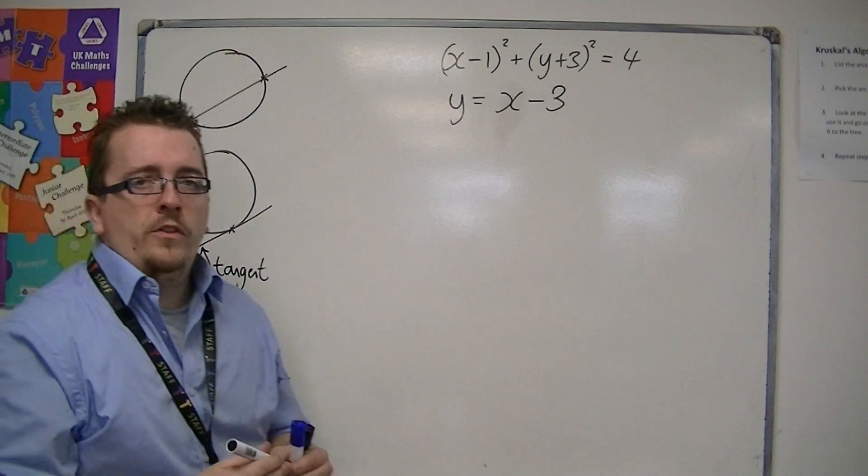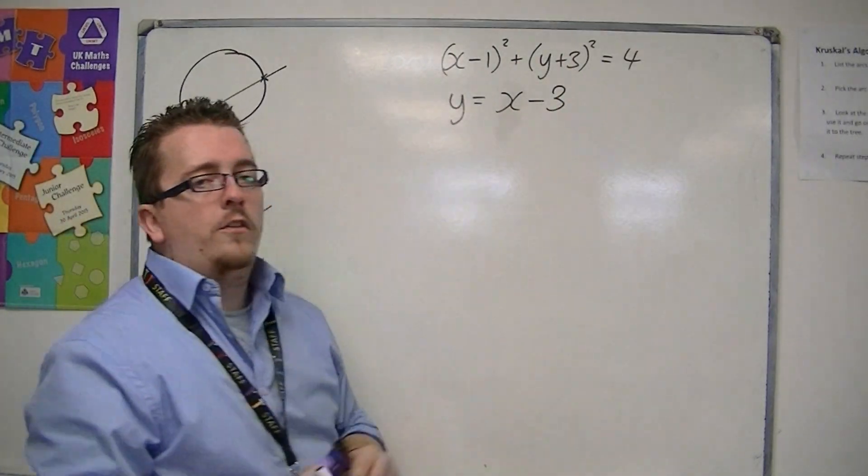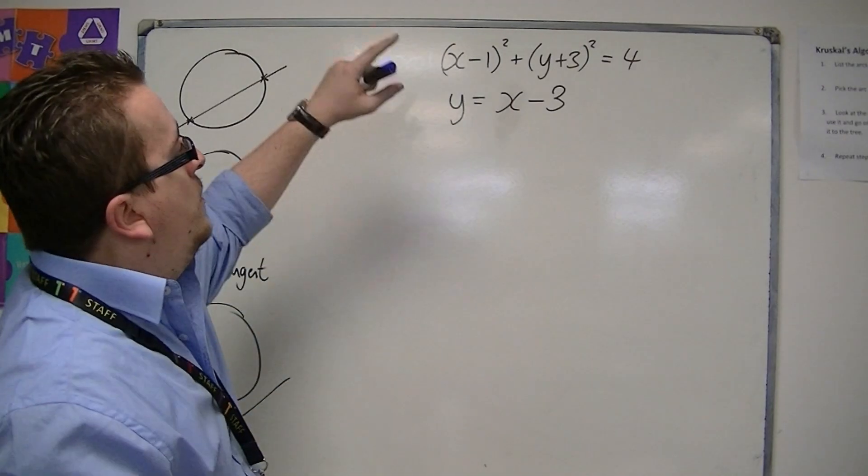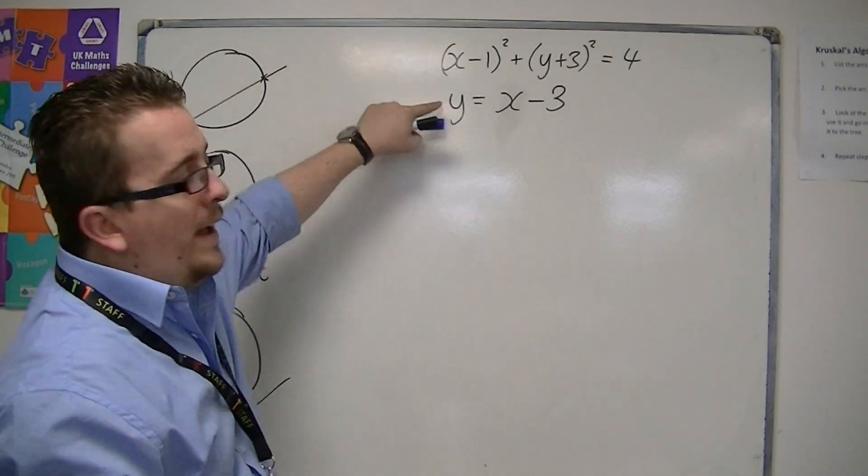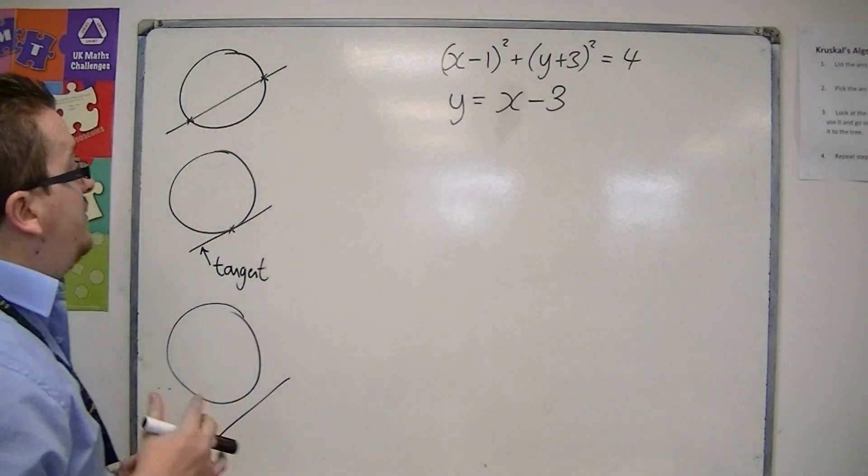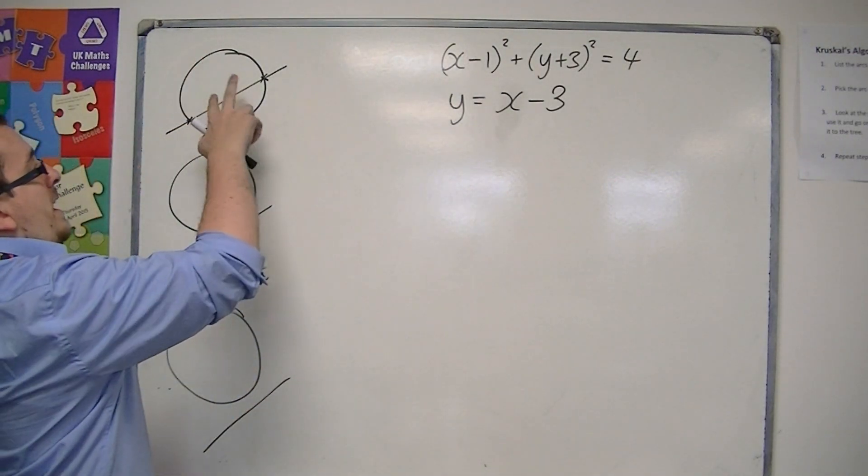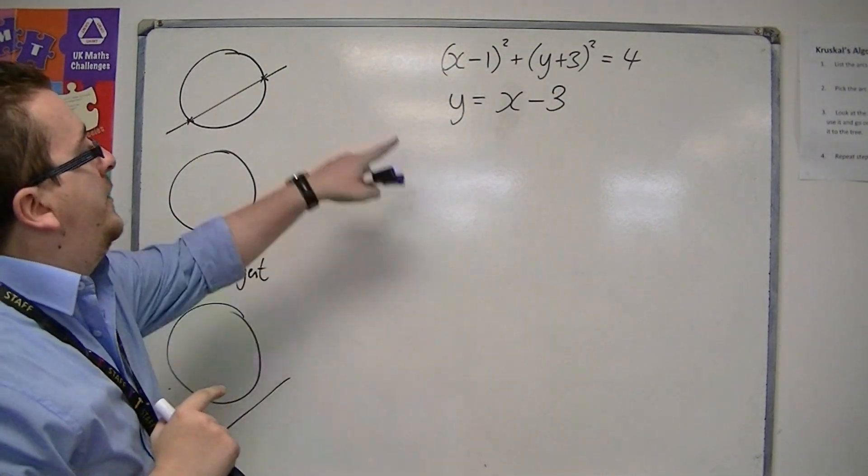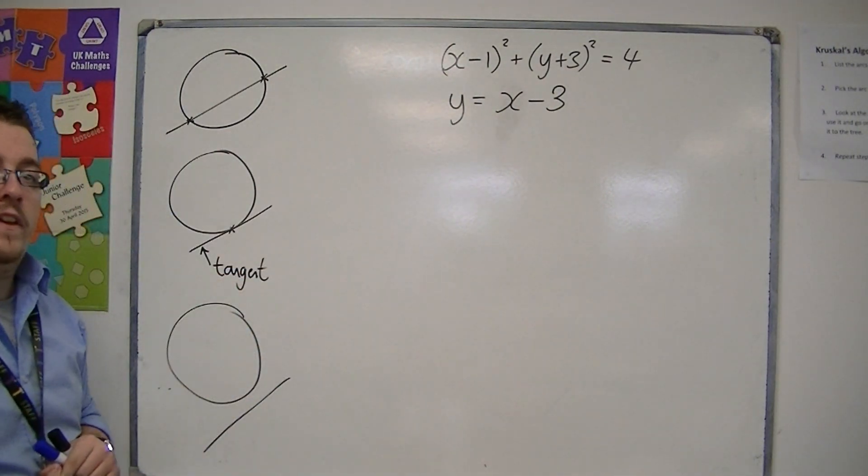Okay, so we've got the equation of a circle and we've got the equation of a line. And we want to determine whether the circle and the line intersect or not. And if they do intersect, then whether we have two distinct points or just one. And so this line would therefore be a tangent to the curve.